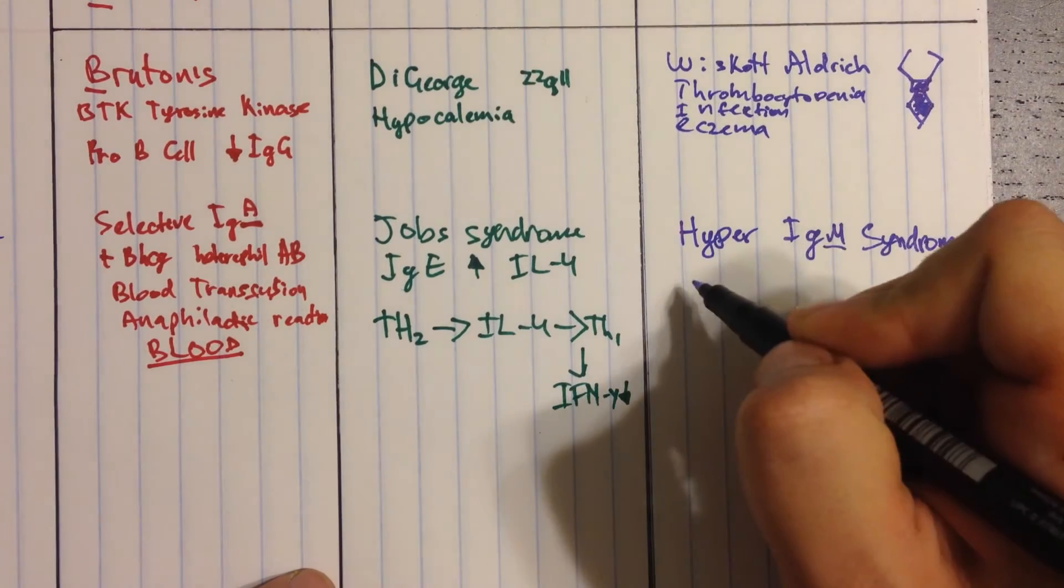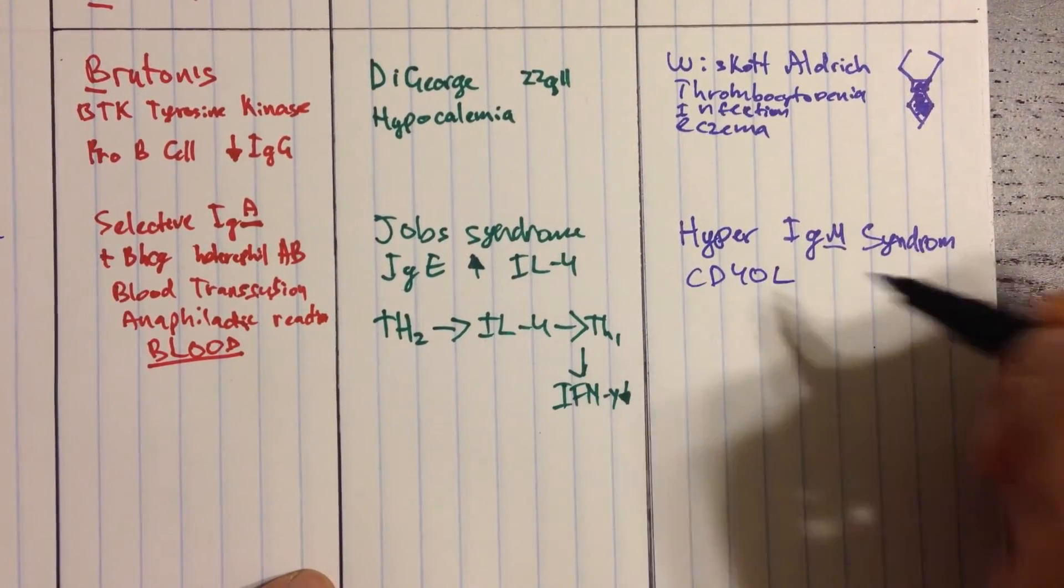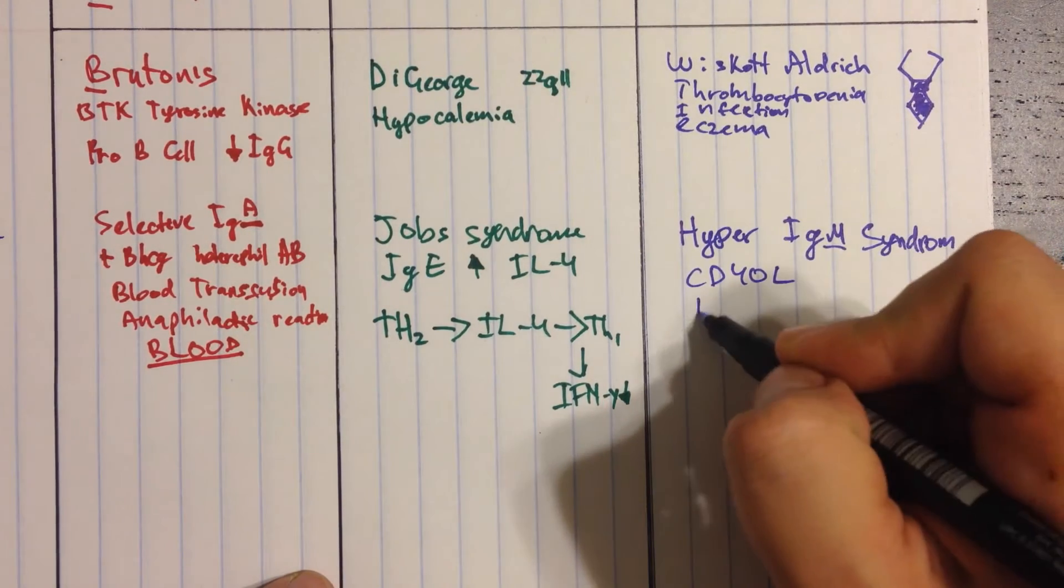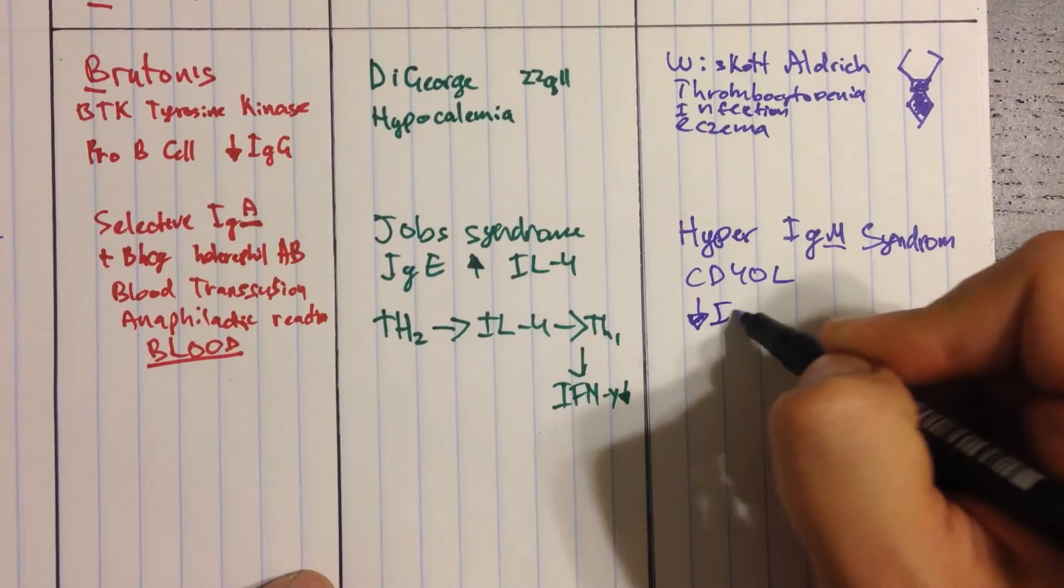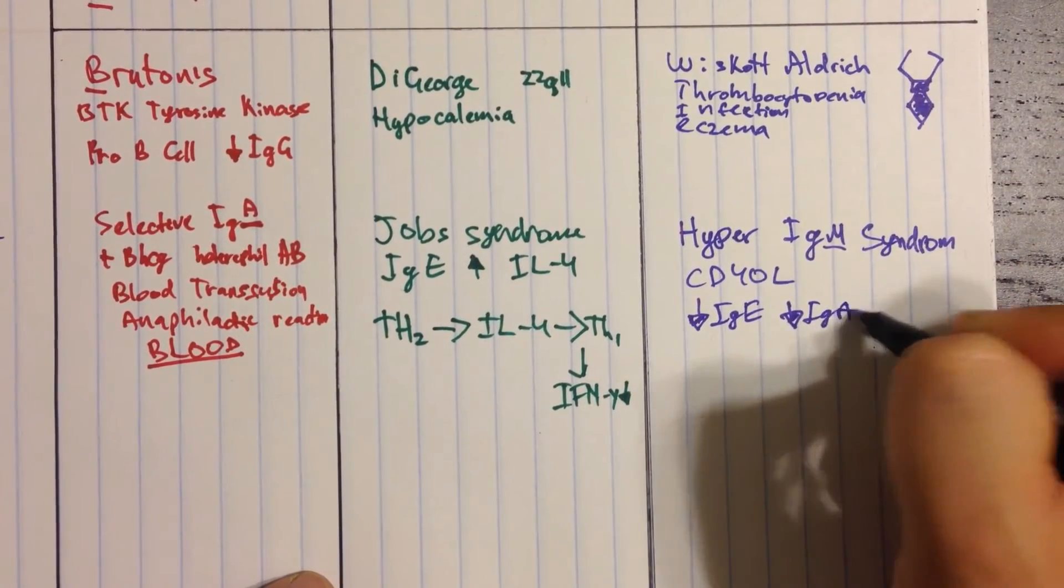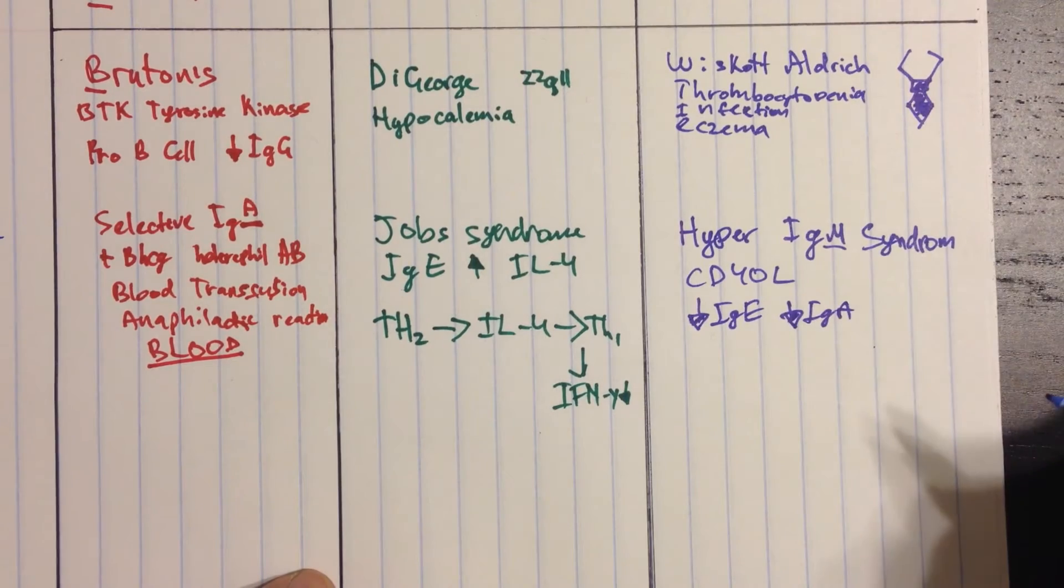Why are we stuck? Because the CD40 ligand on the T cell, which is supposed to come over and activate the B cells to produce these other things, like IgE, which is decreased, or decreased IgA, is broken. So you can't do that. So you're stuck to make IgM. And that results in infection.